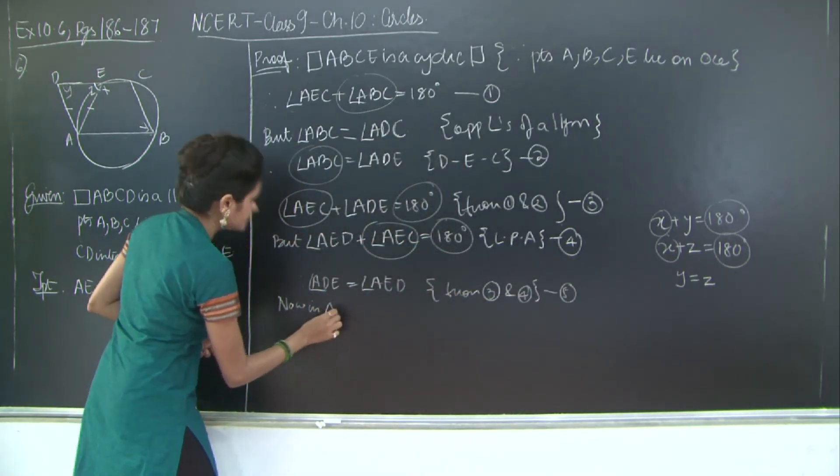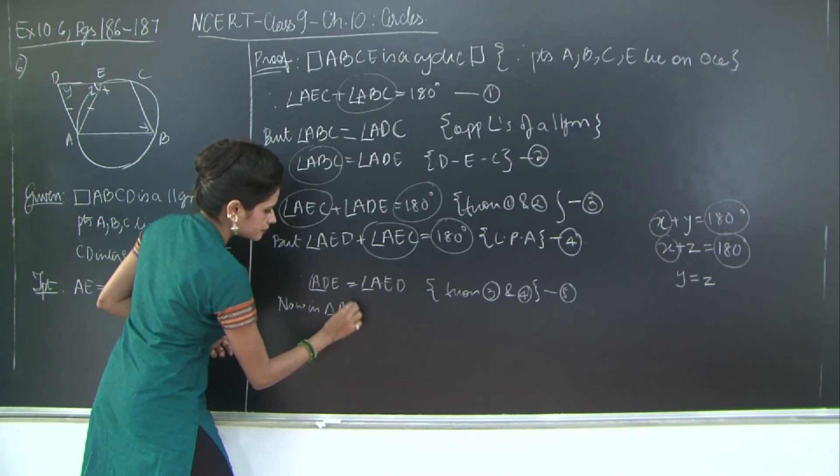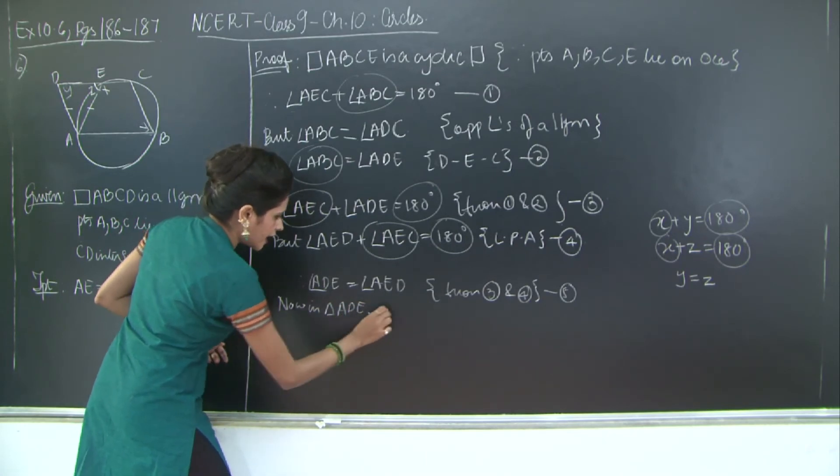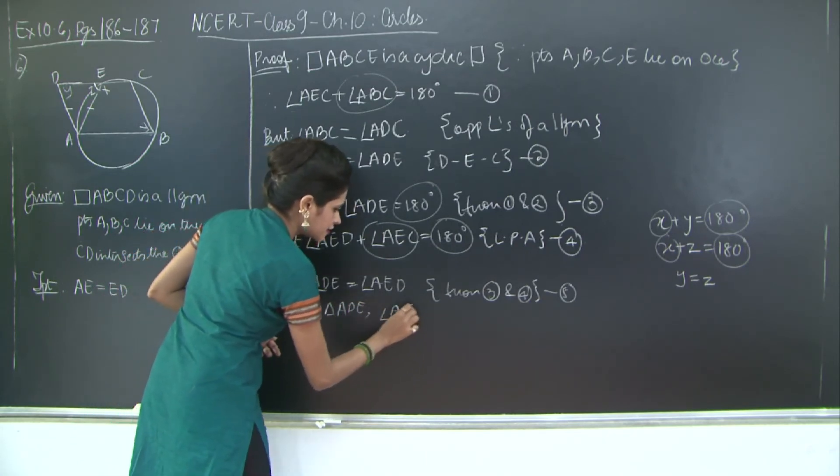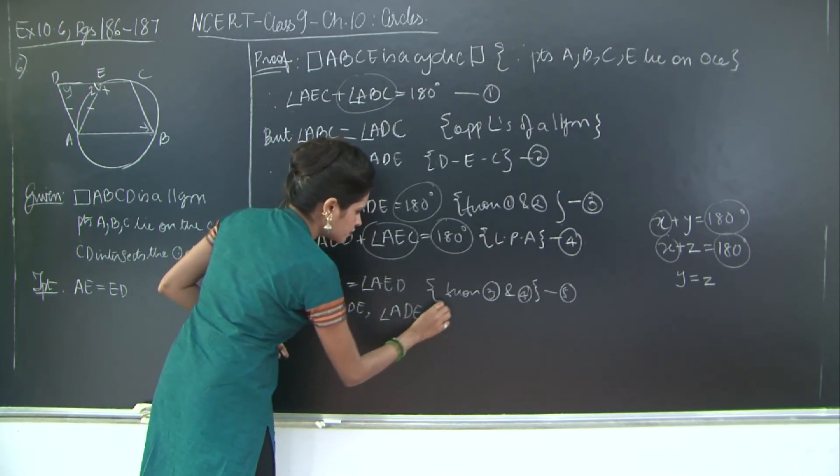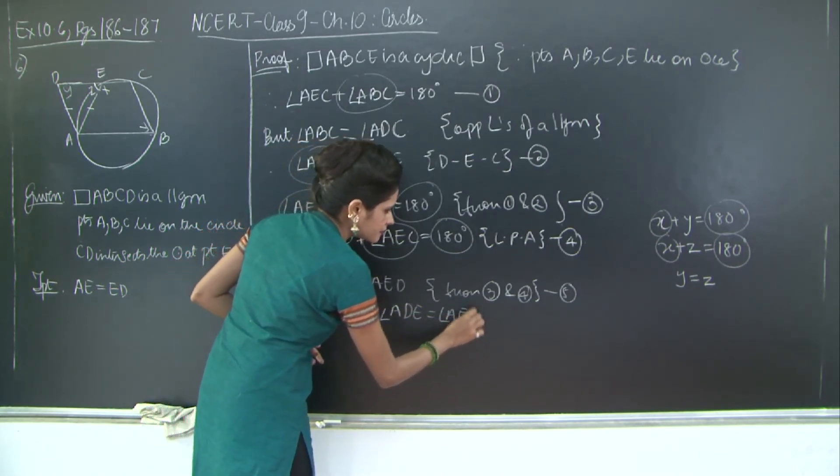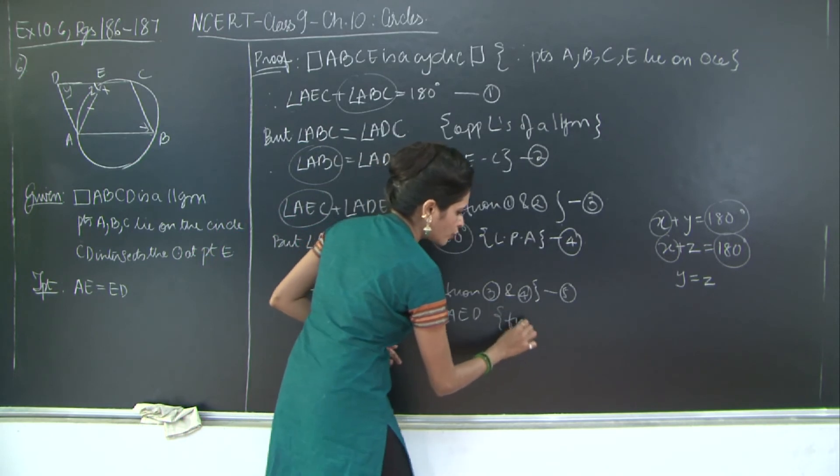In triangle ADE, angle ADE is equal to angle AED from four and five.